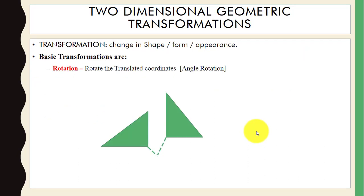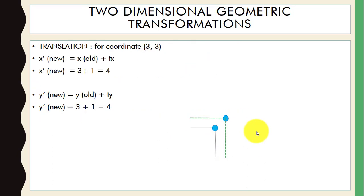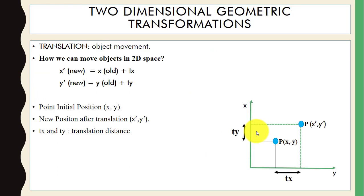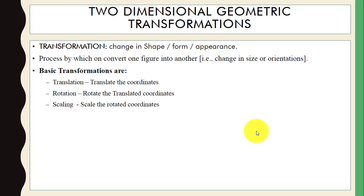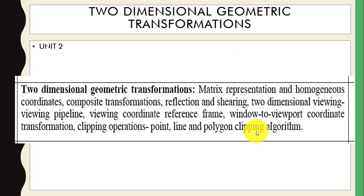So those are the three basic types of transformation: in scaling we can change the size of the object; in rotation we can rotate shapes at any angle from their orientation; and in translation we can move the object from one position to another. That's a short introduction to transformation. In the next videos we will cover matrix representation, reflection, pipeline view, window clipping, and polygon clipping algorithms. If you have any questions, comment below. Thanks for watching.